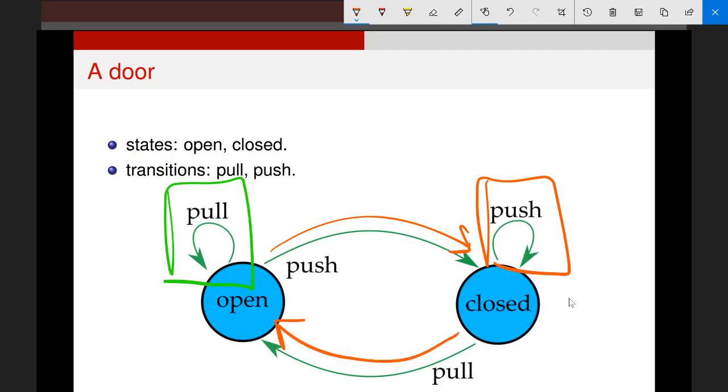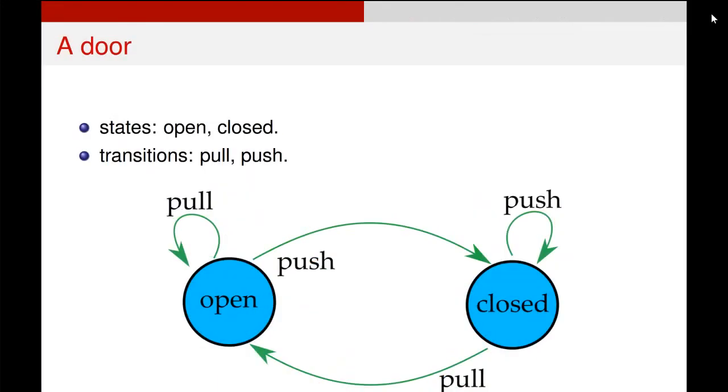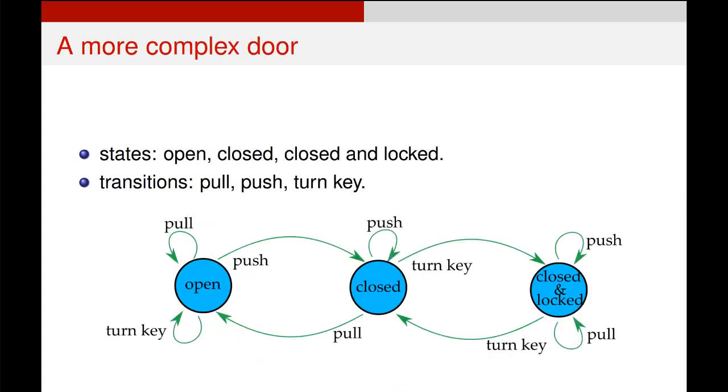So two states, two possible actions, push and pull, and four possible transitions there. Now, obviously for something like a door, it's probably not really helpful to describe it using a finite state machine. It's too simple. But finite state machines can rapidly lead into complex behavior, which makes them really useful for simulating complex systems or controlling AI in games.